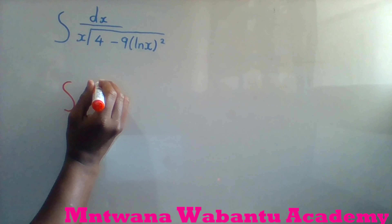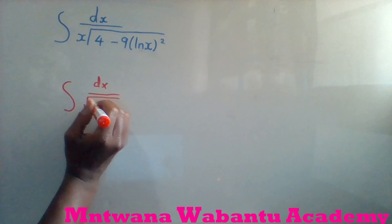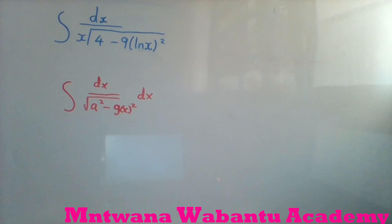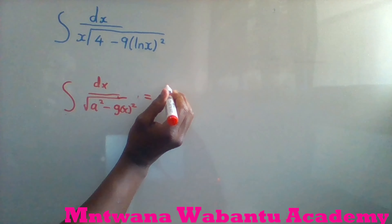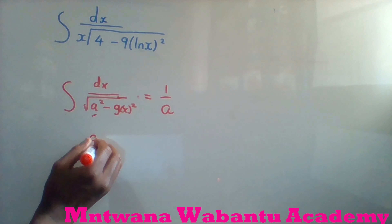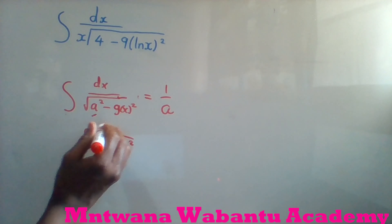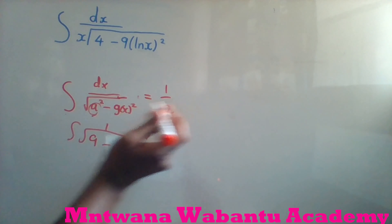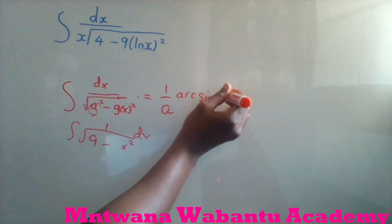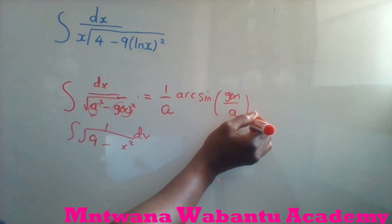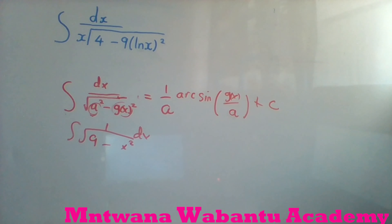For example, if somebody gives you an integral of the form 1 over the square root of a² minus g(x)², dx — this is the memorized form. This is a one-over-a formula: you take one over a, then arc sine of g(x) over a, plus constant. So memorize this part.